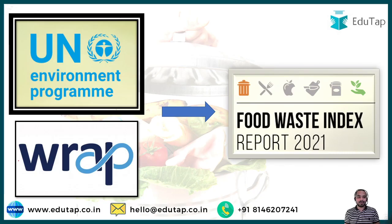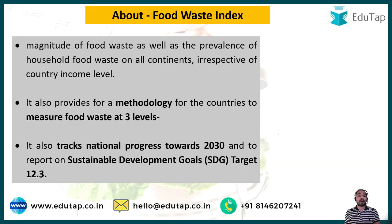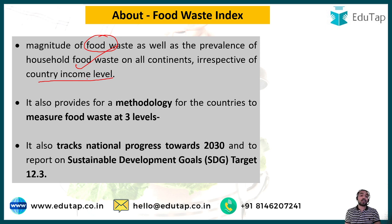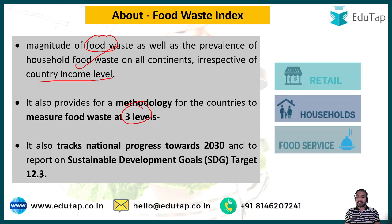A Nairobi-based international organization, the United Nations Environment Program (UNEP), in collaboration with Waste and Resources Action Program (WRAP), has released the Food Waste Index Report 2021. This index sheds light on the magnitude of food waste generated as well as the prevalence of household food waste generation in all continents, irrespective of the country's income level. It also provides methodology to measure food waste at three levels.